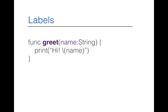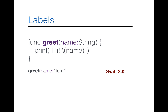Here is another example with functions. We'll see many examples in upcoming playground demonstrations. We have a function with a parameter `name` of type String, used to print a message greeting a person by using the value passed as an argument. When you call this function now in Swift 3.0, you include the first parameter label. Previously with Swift 2.2, the first parameter was omitted.